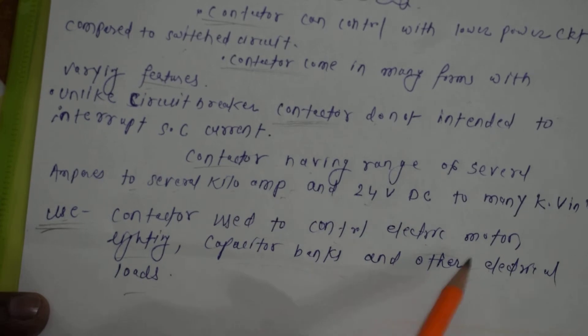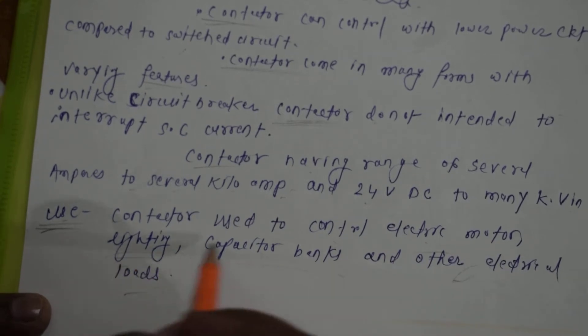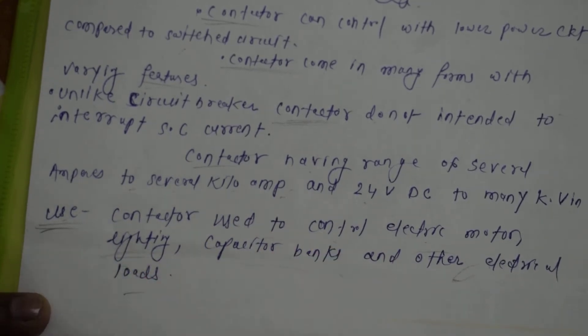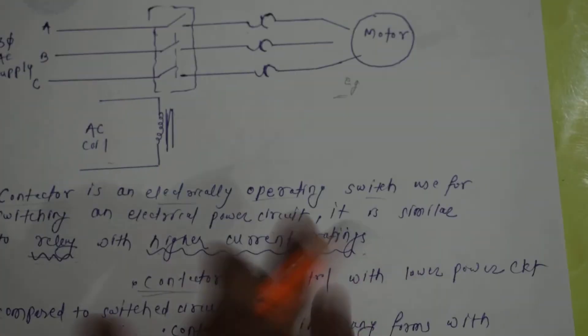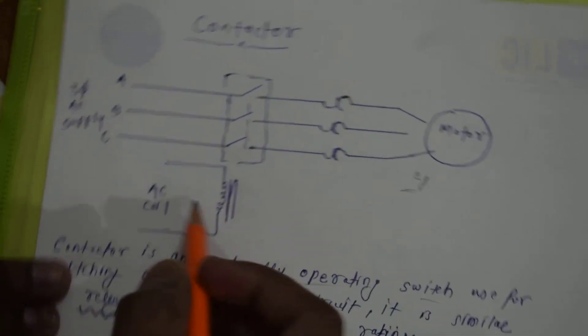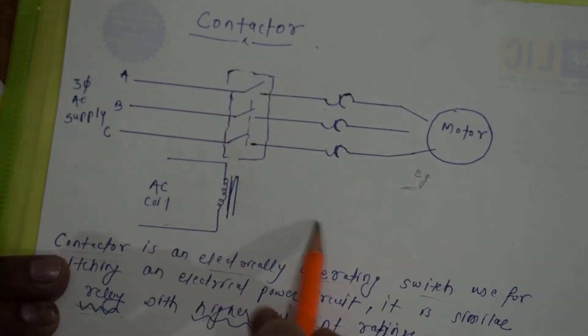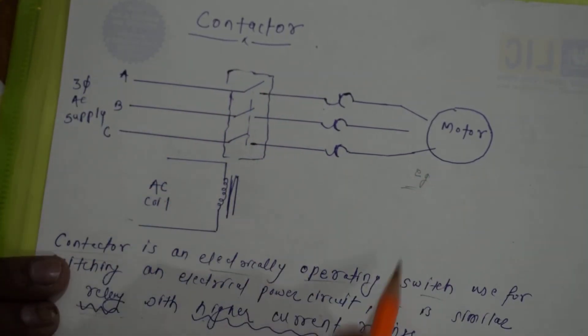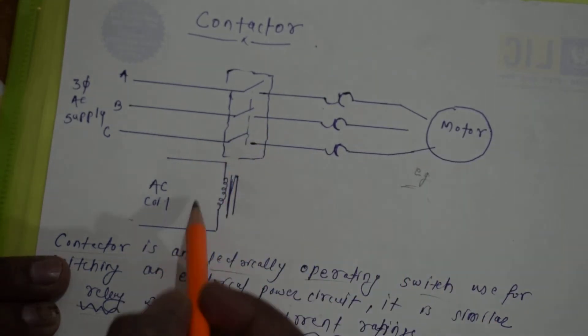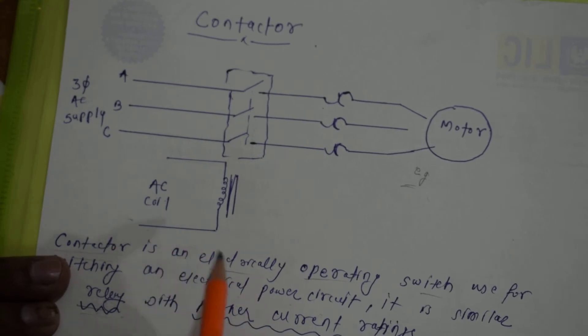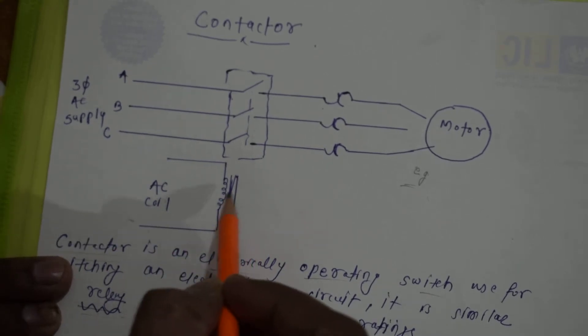And 24 volt DC to many kilovolts. We can use it in lighting, motors, capacitor banks and other electrical loads.